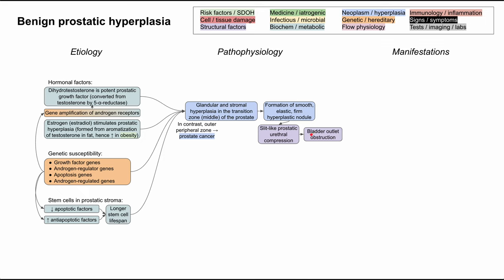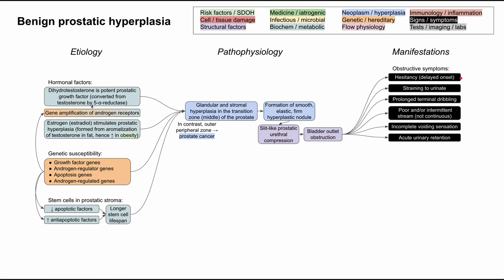Now let's get into the manifestations of BPH, working through pathophysiology to understand the symptoms. There are obstructive symptoms that result directly from the bladder outlet being obstructed. These include urinary hesitancy with delayed onset of urine flow, straining to urinate, prolonged terminal dribbling, poor or intermittent stream, and incomplete voiding sensation — where the patient still feels their bladder is partially full after voiding. Acute urinary retention can also occur.